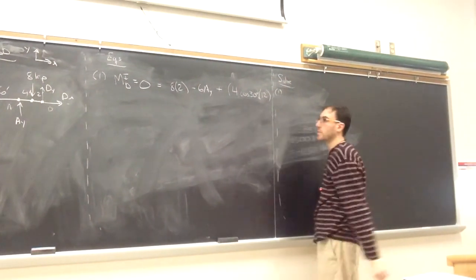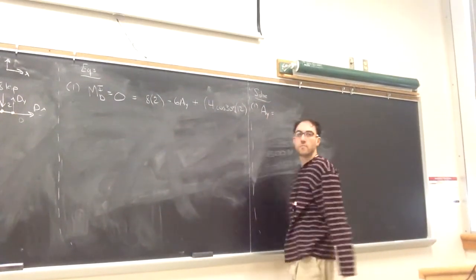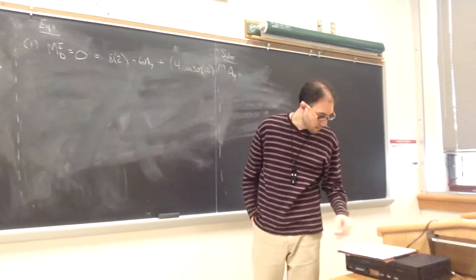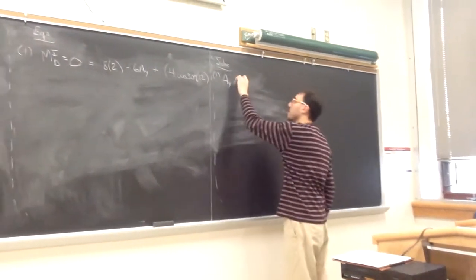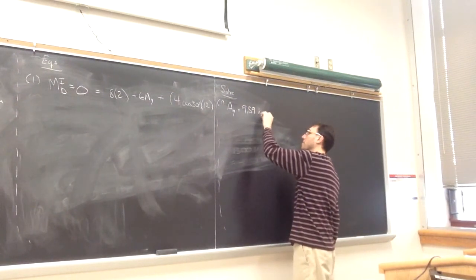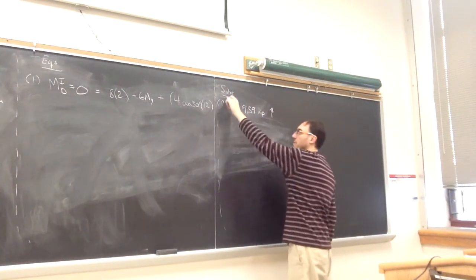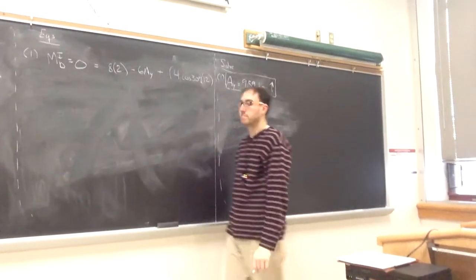Because we started with the moment equation, AY is the only thing I do not know. And I can right away get AY. AY is going to be 9.59 kip. We assumed it was up and it was positive, so our assumption was correct. AY I have.